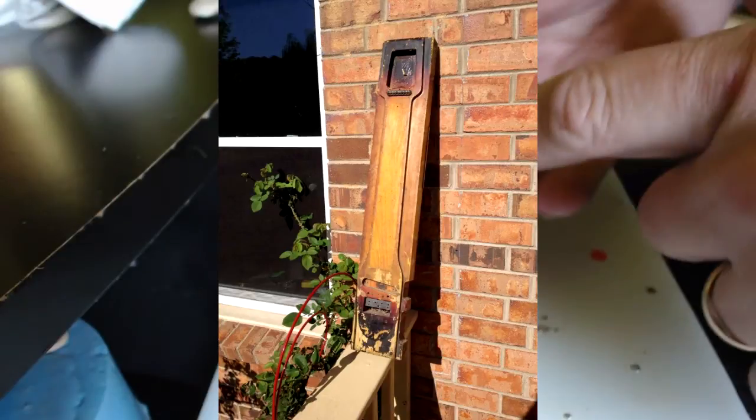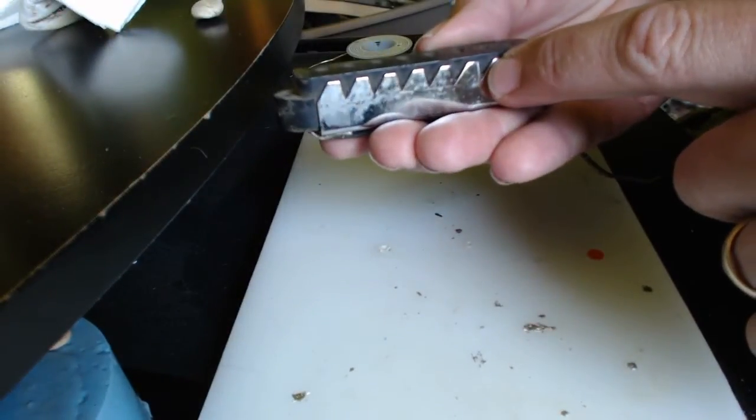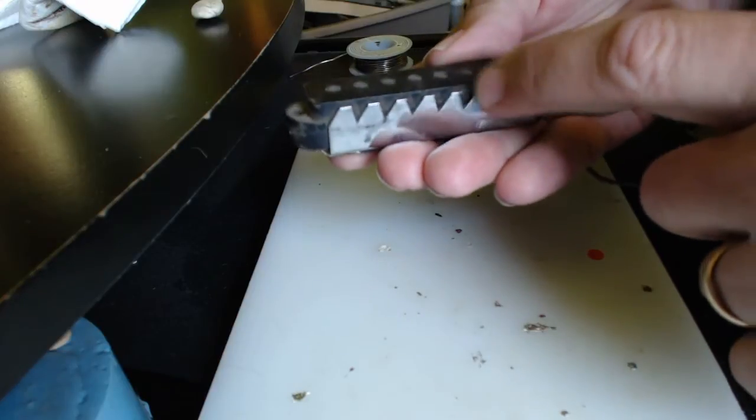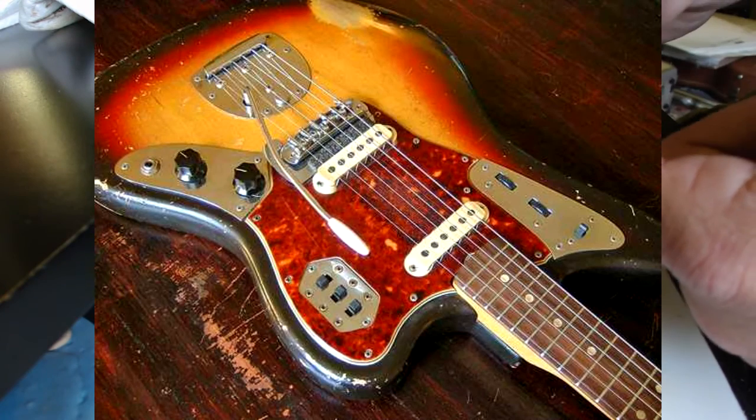This was the first year that they used the Jaguar style pickup. This pickup has this metal frame that goes around it that helps cut down some of the noise that you get on a single coil. And it actually changes the sound a little bit. That's why a Jaguar pickup sounds a little bit different than a Strat pickup.